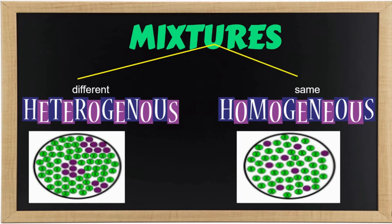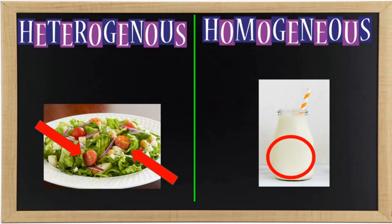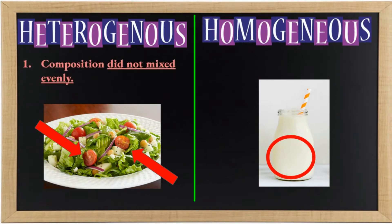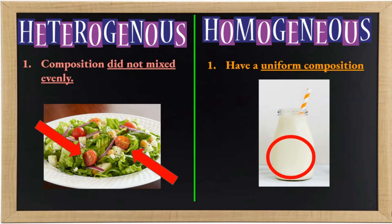Let us differentiate the two types of mixtures based on their properties. One characteristic of heterogeneous mixture is that the mixture did not mix evenly. For example, a vegetable salad — you can still see or identify the tomato, lettuce, sauce, and onion. This means the compositions are still identifiable because it did not mix evenly. On the other hand, homogeneous mixtures have uniform composition because the particles or solvents are totally dissolved — in short, they mix evenly.